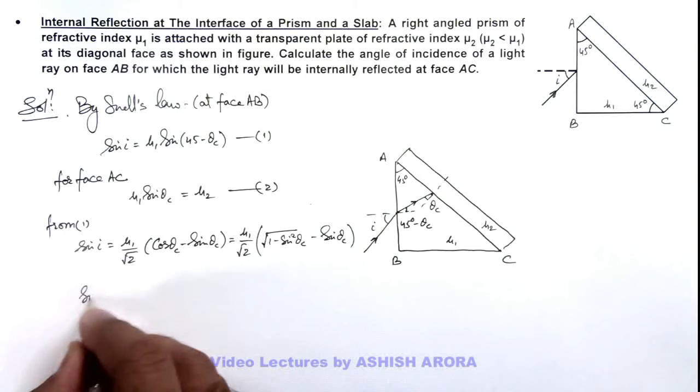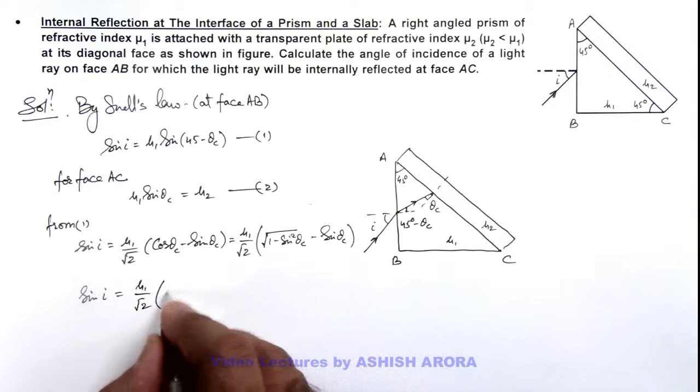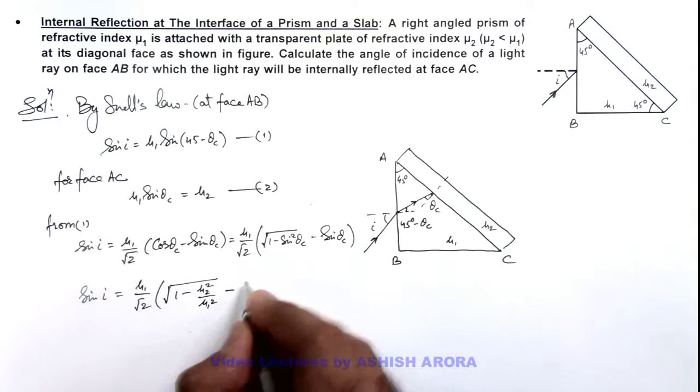So here the value of sin i we are getting is (μ₁/√2) multiplied by √(1 - μ₂²/μ₁²) minus μ₂/μ₁.